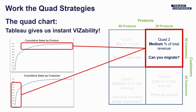Quad two is our tail products combined with our top customers — good customers buying not-so-great products. It's a smaller percentage of revenue, and the question we ask is: if there are 80s products those good customers could buy, can we migrate them from the 20s products to the 80s products? That makes it much easier on our operations and on the front end of our business in managing our SKU base.